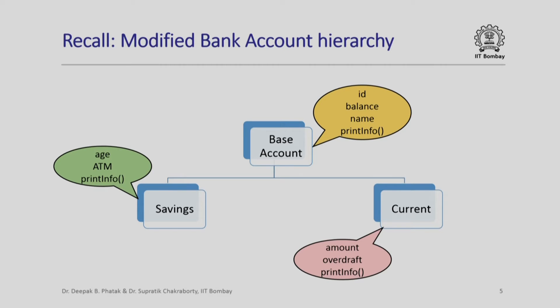Now recall the bank account hierarchy that we have studied earlier. We are only going to look at the part of the hierarchy where there is a base account, a savings account derived from it, and a current account also derived from it. The base account has three data members — ID, balance and name — and it has a member function called print info.